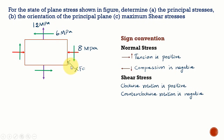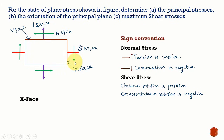We have the X-face and the Y-face. We are going to find three points to construct the Mohr's circle: two points located on the circle and one center point. In Mohr's circle, the horizontal axis represents normal stress and the vertical axis represents shear stress, so one component is normal stress and the other is shear stress.